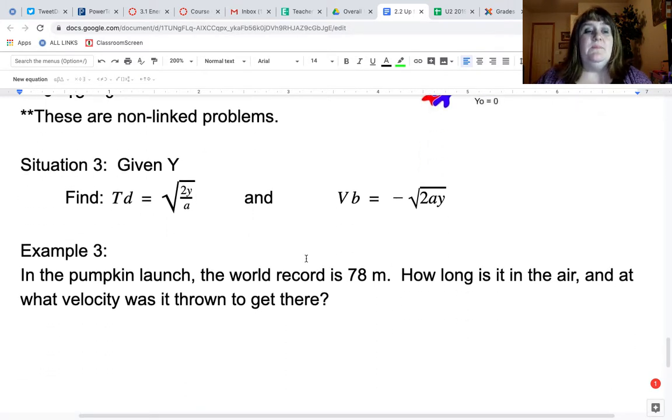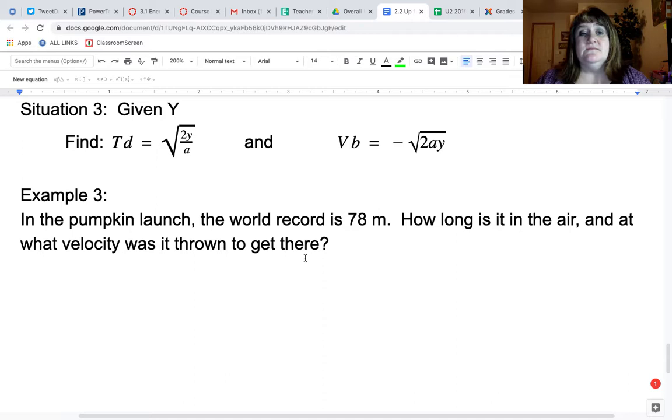A pumpkin is launched and the world record is 78 meters. So how long is it in the air and at what velocity was it thrown to get there?